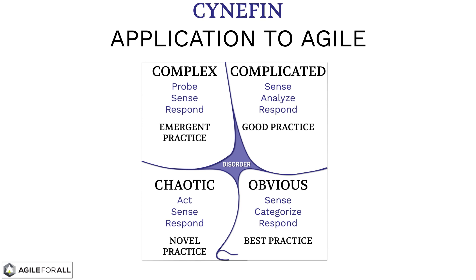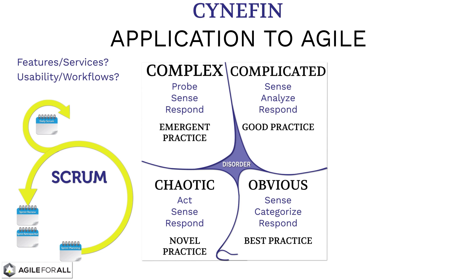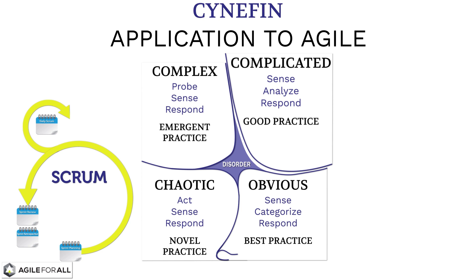Agile frameworks are designed to function along the boundary of complex and complicated. Let's take a simple Scrum product development example. Product development is an inherently complex type of problem, since we can't accurately predict exactly which features and services a customer might want, how they might use them together in various workflows, and exactly what technological approaches might best deliver those solutions. For many years, most organizations have treated this problem as if it is complicated, devoting more and more time and expertise to analyzing the problems up front. Since they are using the wrong domain to solve this problem, the results don't get better with more analysis.